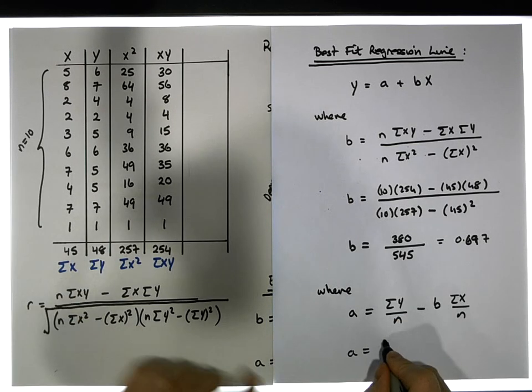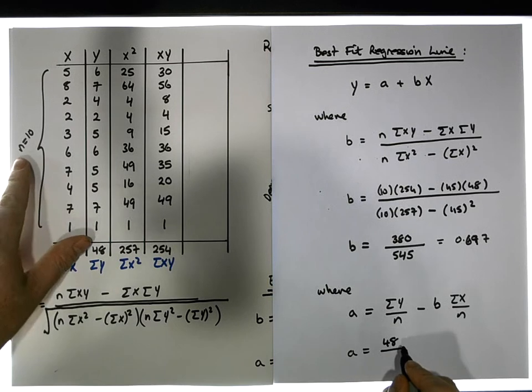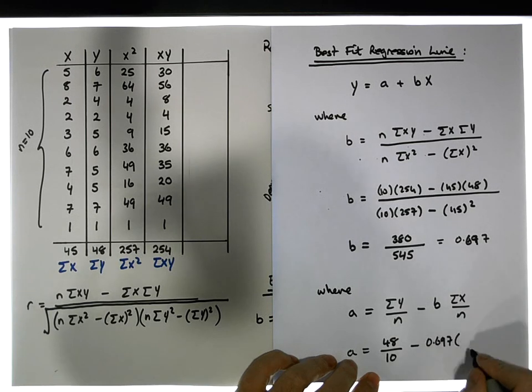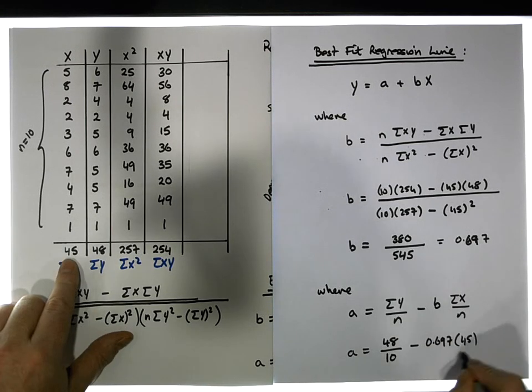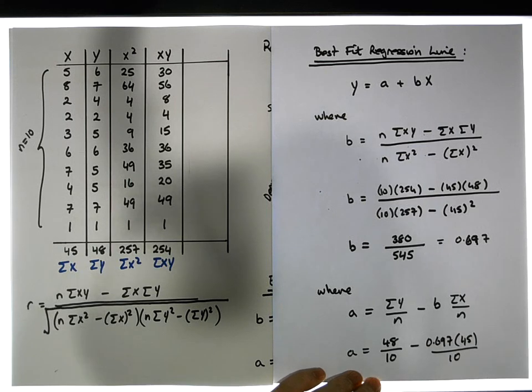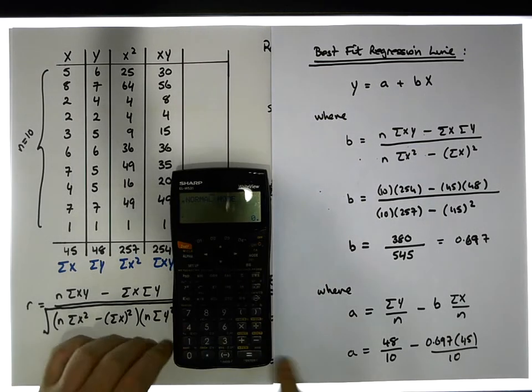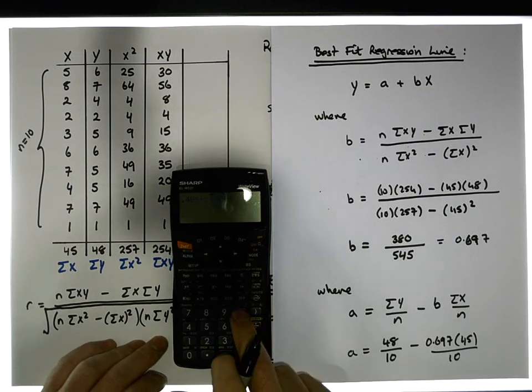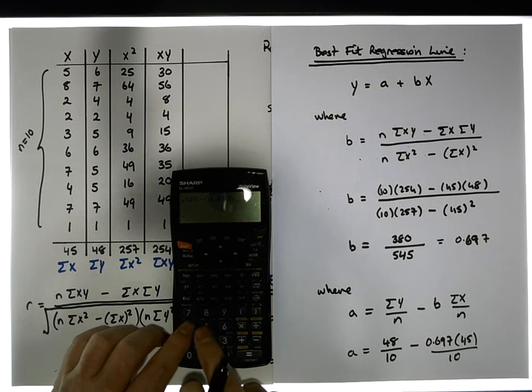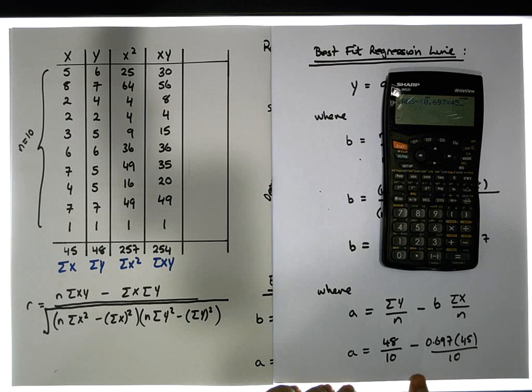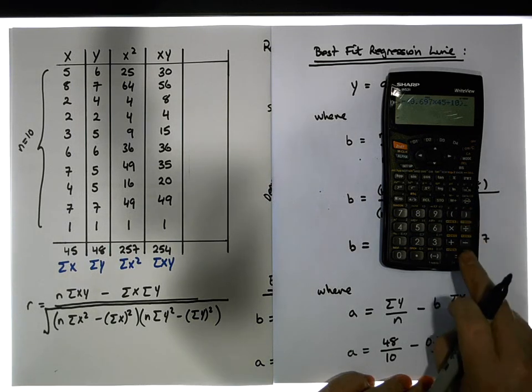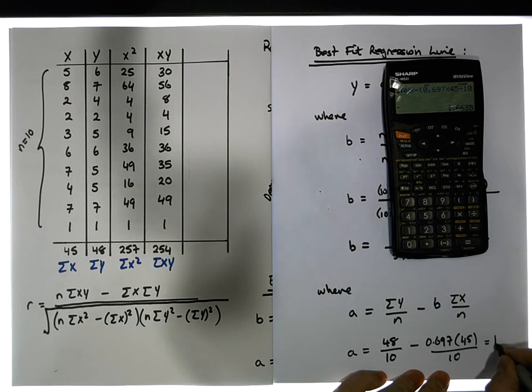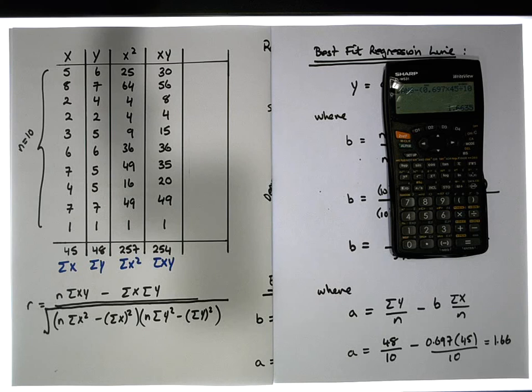So that tells us then that a is equal to the sum of the y's is 48 that needs to be divided by the sample size, the number of paired observations is 10, minus the b value which is 0.697 times the sum of the x's which is 45 which needs to be divided also by 10. When we do that we end up with 48 divided by 10 and take away from that 0.697 multiplied by 45 divided by 10 which gives us a value of 1.6635, so it's equal to 1.66 to two decimal places.